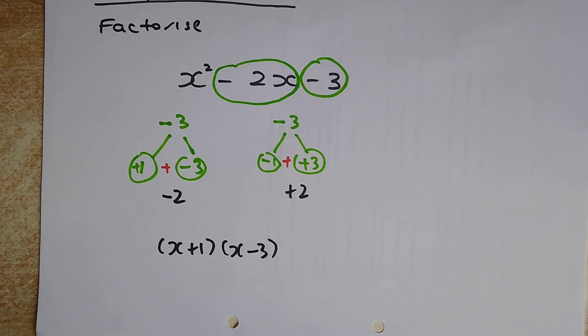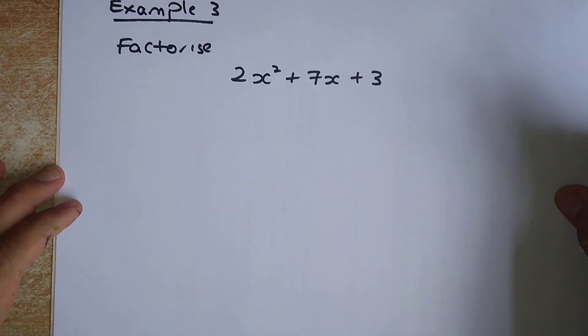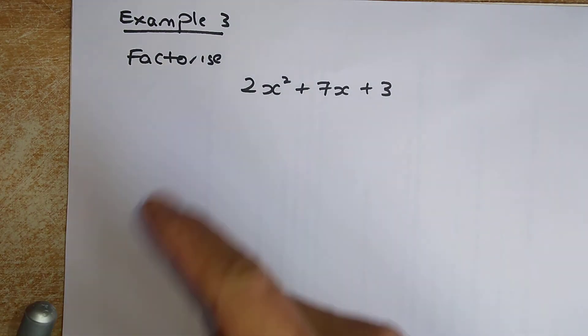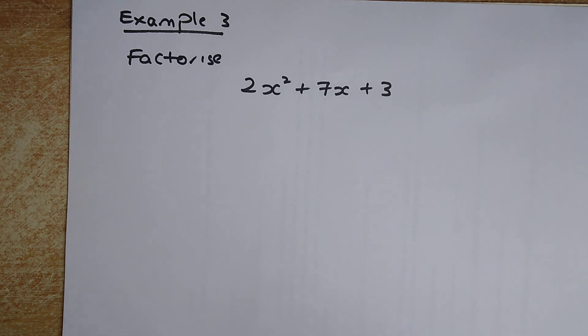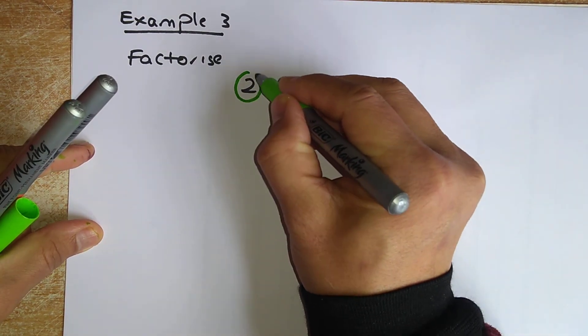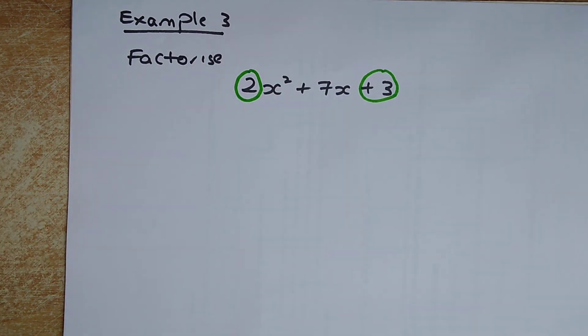That is the monic example. Now we are going to do the non-monic example. The non-monic case happens when the coefficient of x squared is not 1. In this case it is 2. This is similar but has an additional step: you multiply the leading coefficient and the constant together — 2 multiplied by 3 gives you 6.